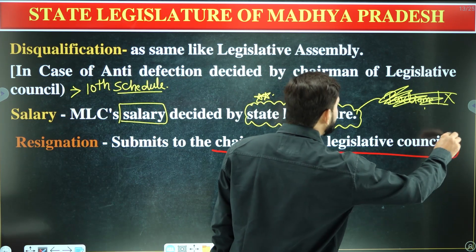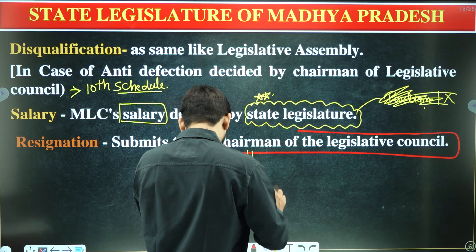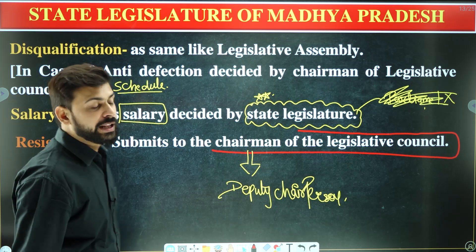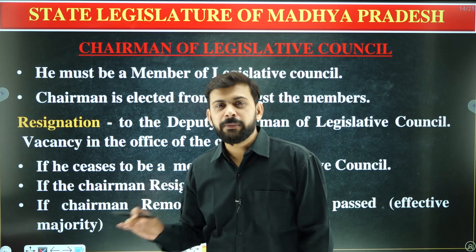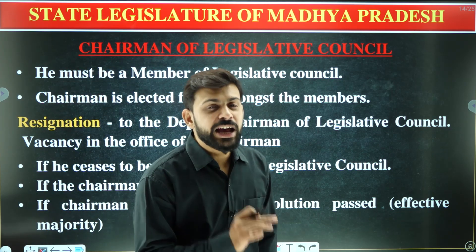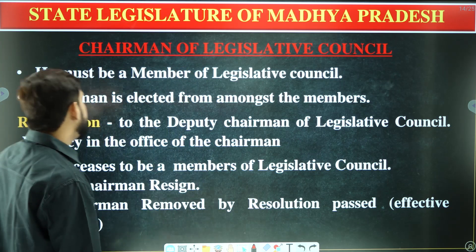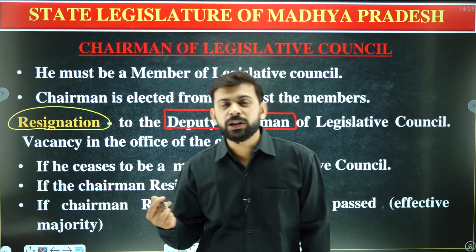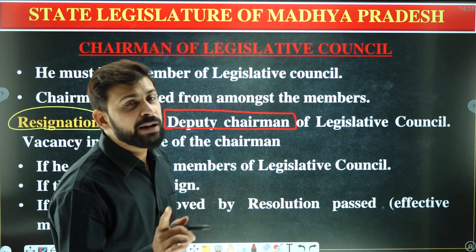Regarding resignation: in the legislative council, the Chairman submits his resignation to the Deputy Chairperson, and the Deputy Chairperson submits his resignation to the Chairman. The Deputy Chairman acts as Chairman when the Chairman's office is vacant or the Chairman is absent.